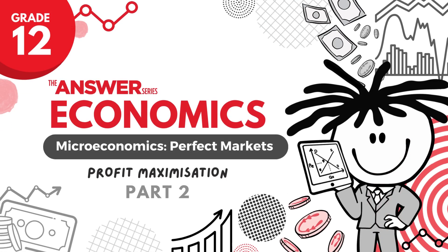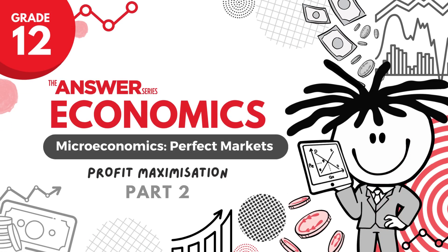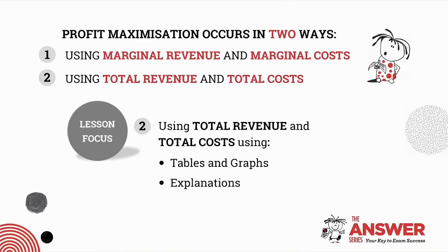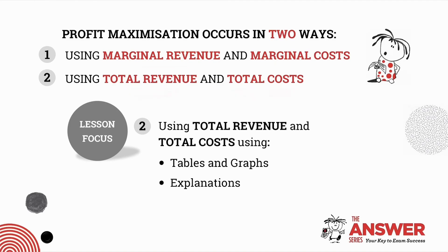Hello and welcome to our series of videos on the perfect market. There are two ways in which profit maximization occurs: using marginal revenue and marginal costs, or alternatively using total revenue and total costs. In our previous lesson we covered the marginal revenue and marginal cost technique, and today's lesson focuses specifically on total revenue and total costs using tables, graphs, and explanations.